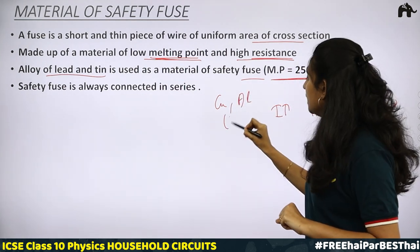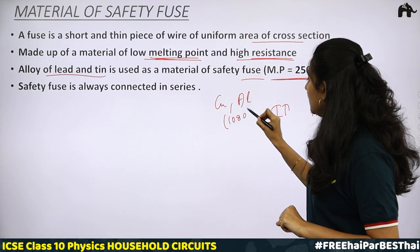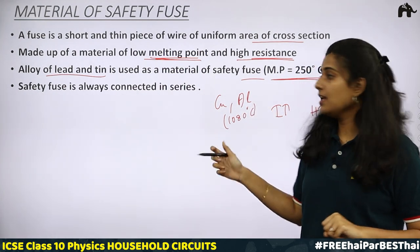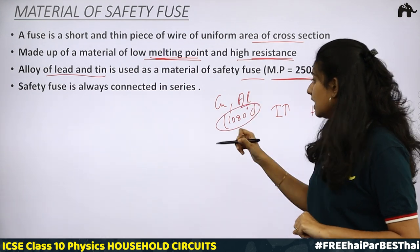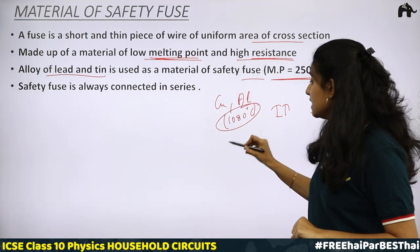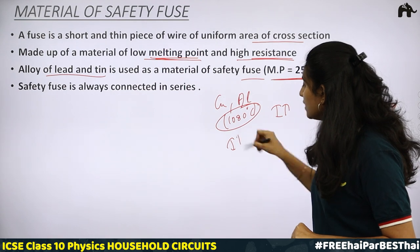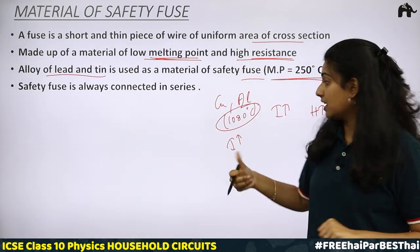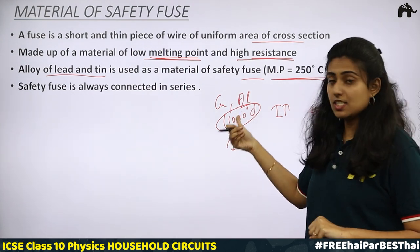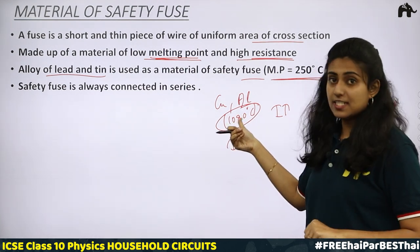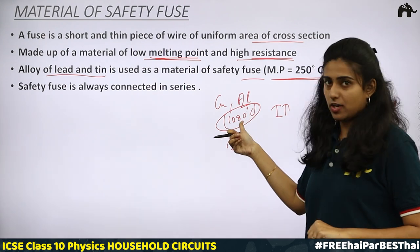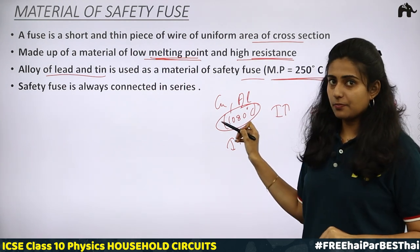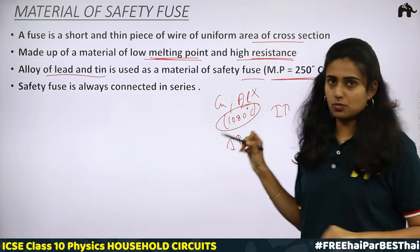If you use copper or aluminum, in these cases the melting point is about 1080 degrees Celsius. Can it be used for making a fuse? No, because the melting point is high — so much current must be given to reach that temperature, making it difficult. So these materials cannot be used for making a safety fuse.